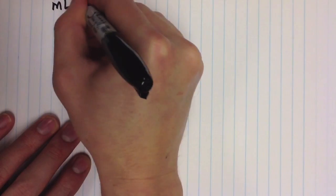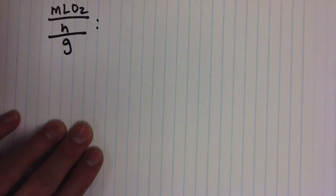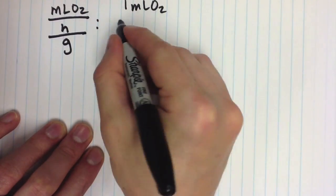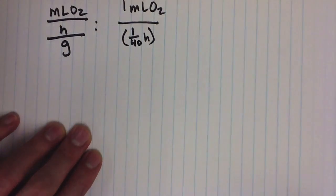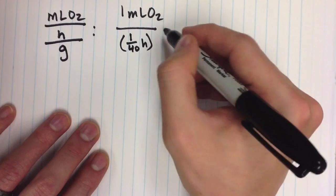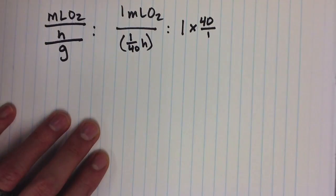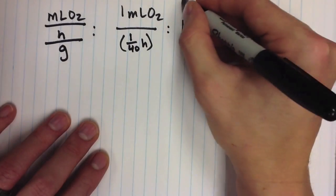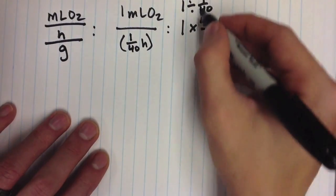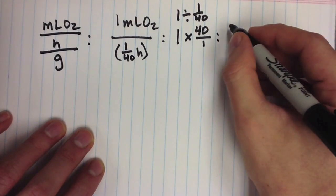We're now ready to calculate our units in milliliters of oxygen per gram hour. We'll use the order: milliliters of oxygen divided by hours divided by grams. We have 1 milliliter of oxygen, and 90 seconds equals 1/40 of an hour. So we have 1 divided by 1/40. Dividing by a fraction means multiplying by the reciprocal, so 1 times 40/1 gives us 40 milliliters of oxygen per hour.